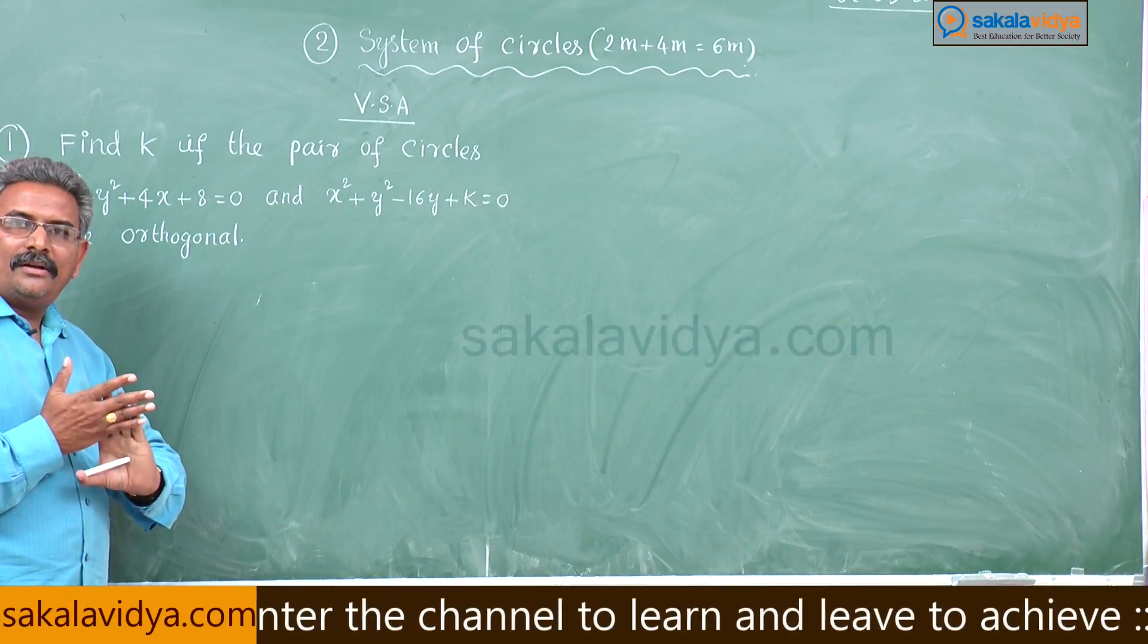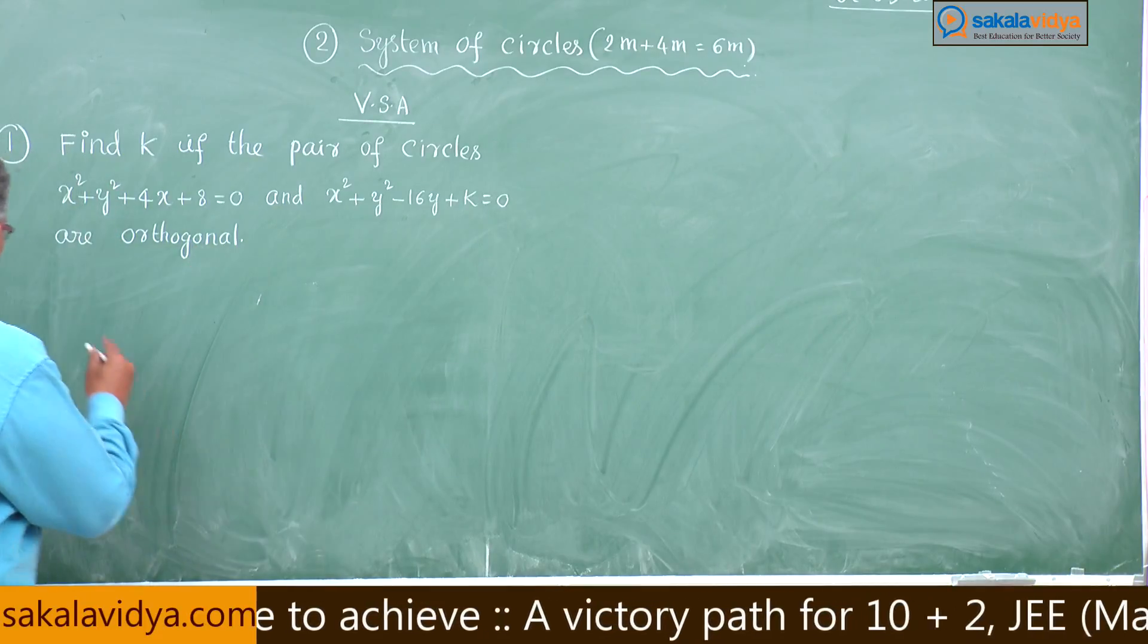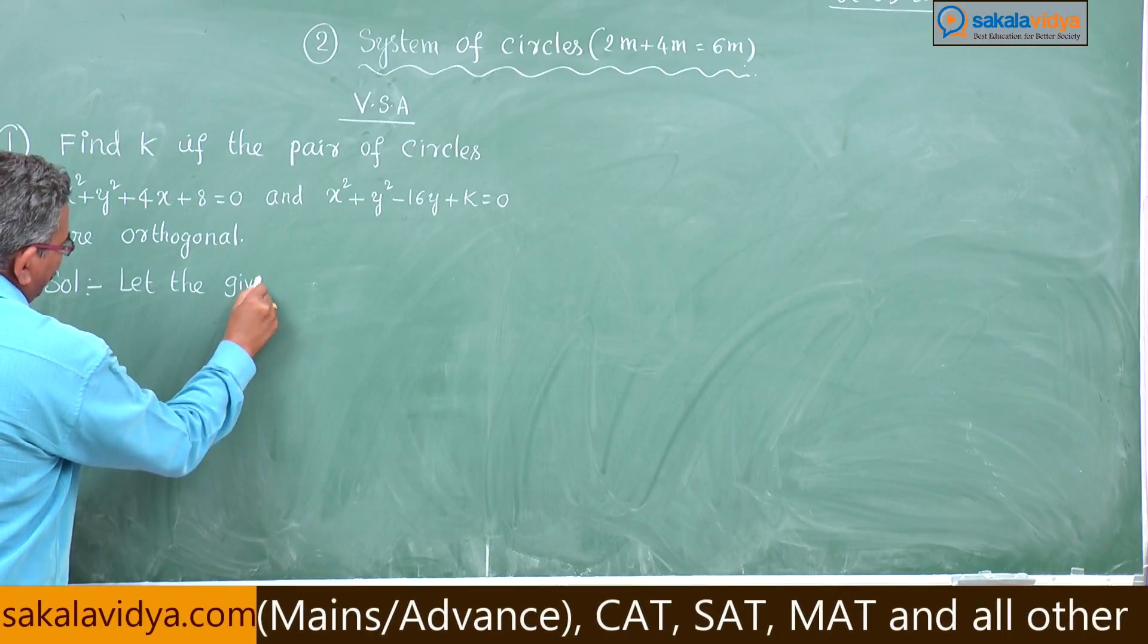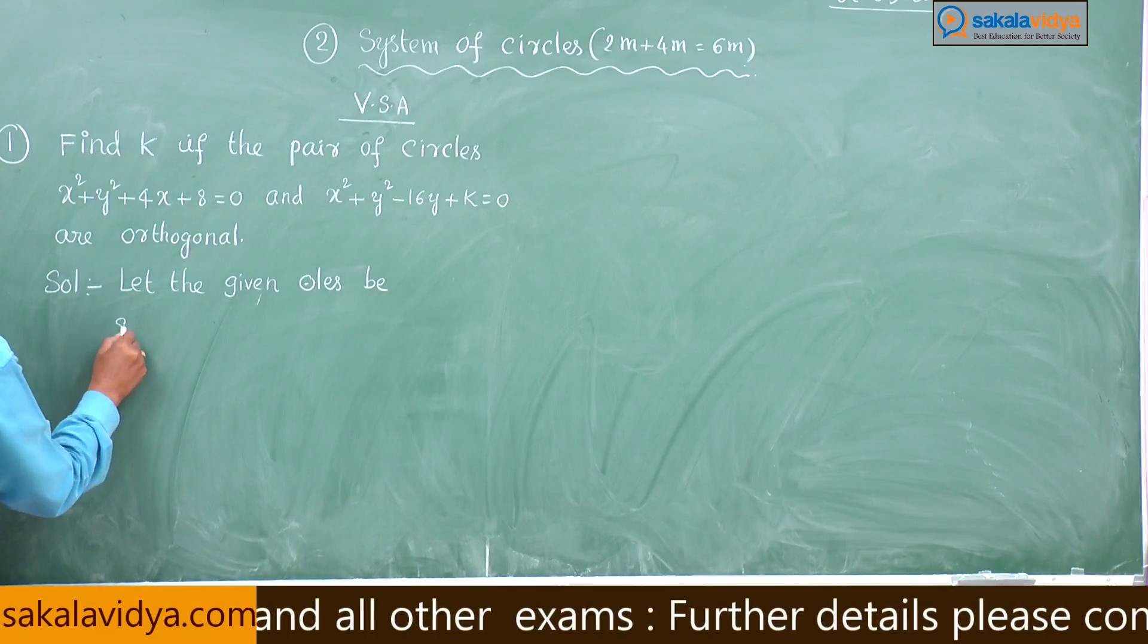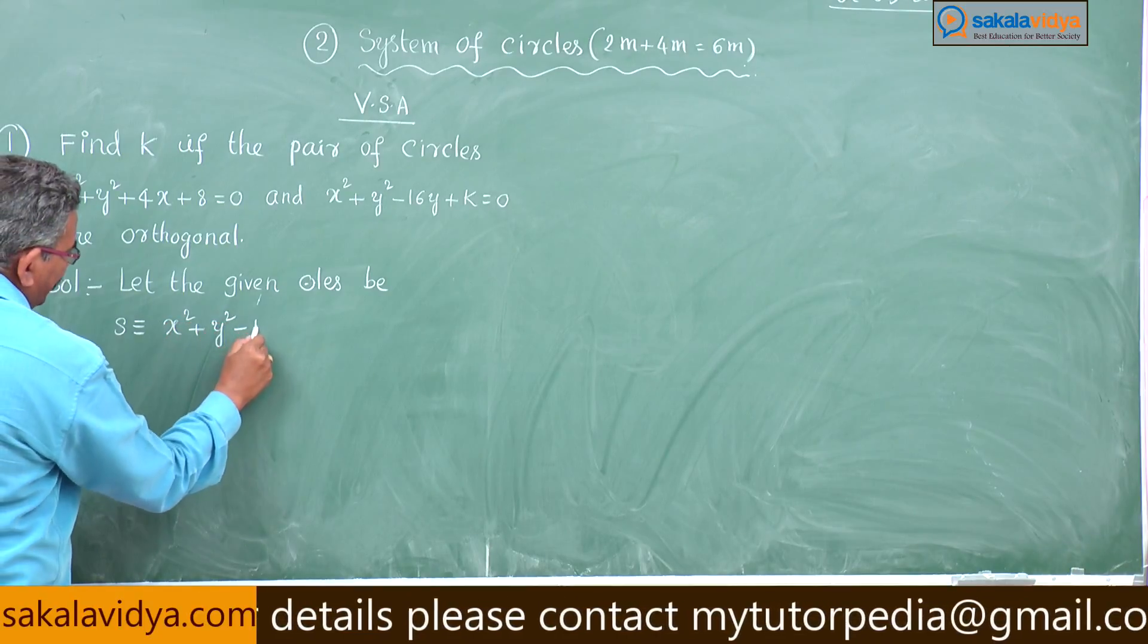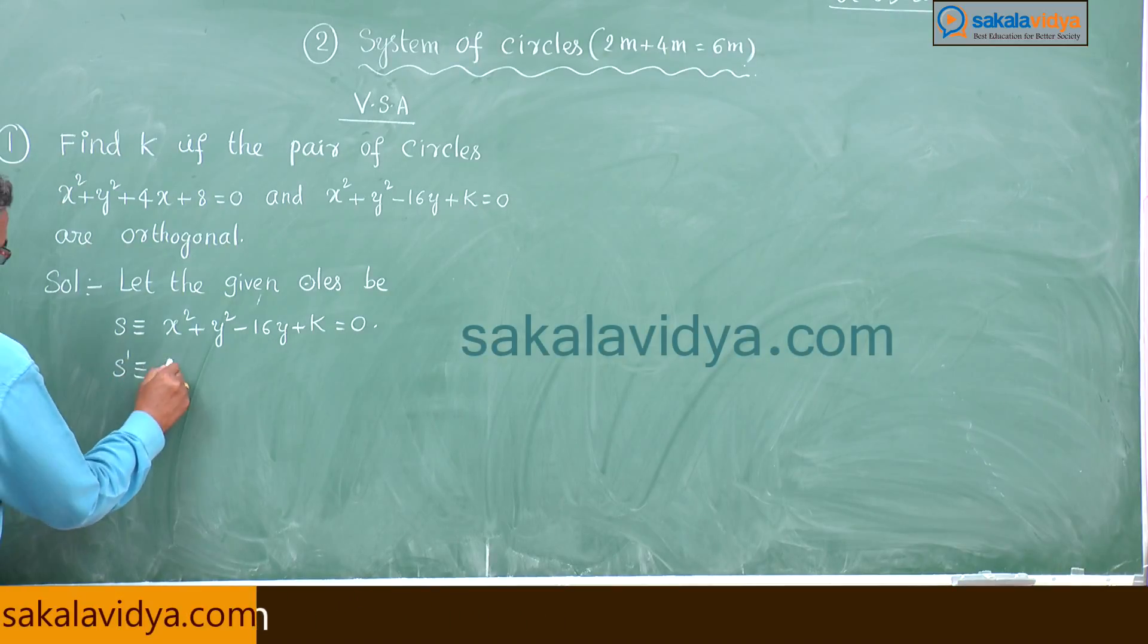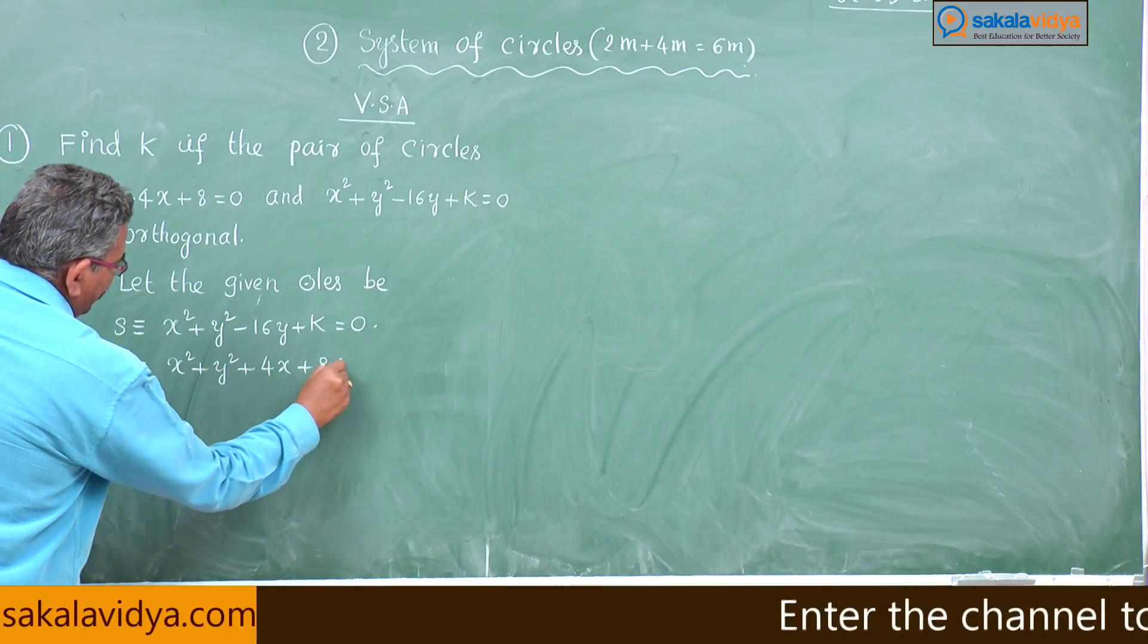Have you followed? Are you ready with your pen and notebook? Shall I start now? Let us start. Let the given circles be S = 0: x² + y² - 16y + k = 0. S' = 0: x² + y² + 4x + 8 = 0.